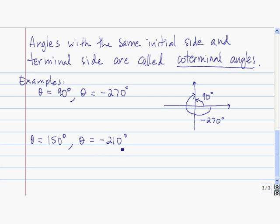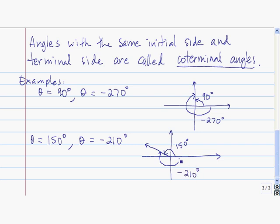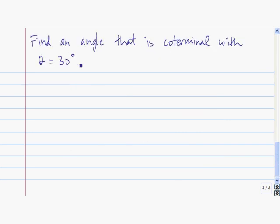The two angles 150 degrees and negative 210 degrees are also coterminal. The angle 150 degrees is somewhere around here — we go to 90 degrees and then it's just 30 degrees shy of 180. Negative 210 degrees starts on the positive x-axis, and we rotate clockwise through 180 degrees and then 30 more degrees. So negative 210 degrees ends up at the same terminal side and same initial side as 150 degrees.